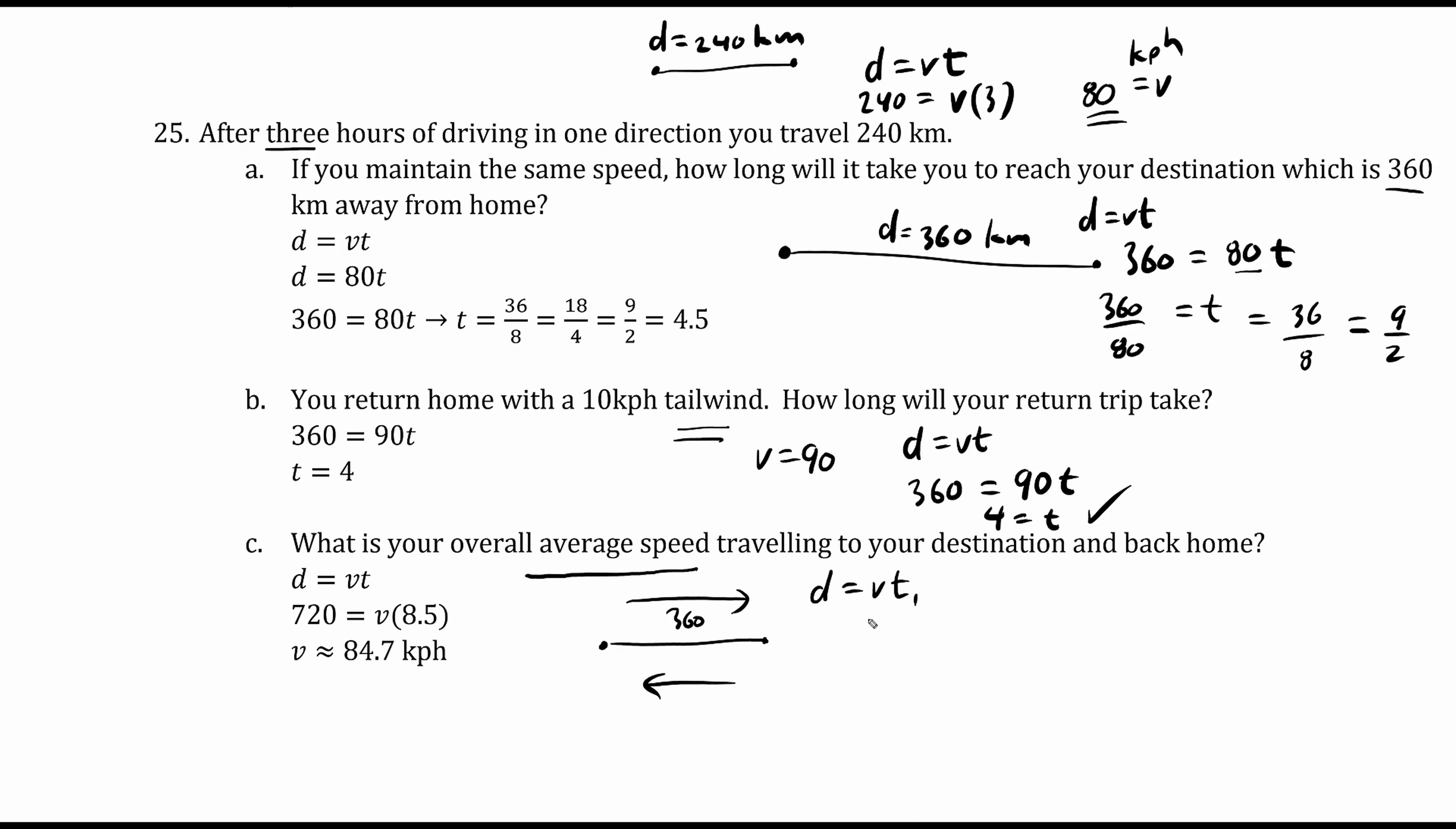We'll call this t1. Our distance was 360 and our velocity was 80. Dividing both sides by 80, t1 equals 360 divided by 80 which is 9 over 2. On the way back we covered 360 and the velocity was 10 kilometers faster. We'll call this t2. Dividing both sides by 90, t2 equals 4.